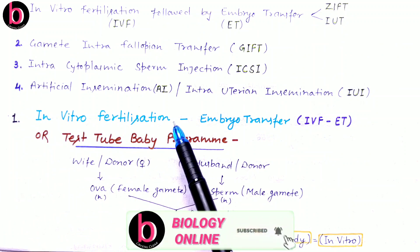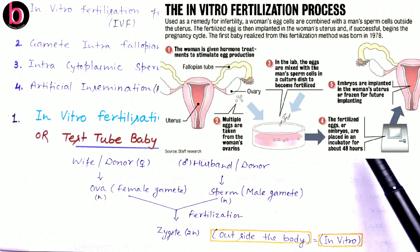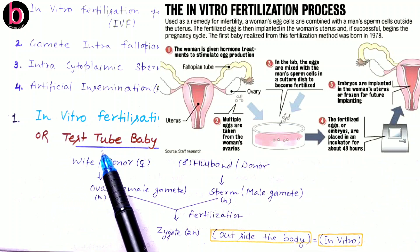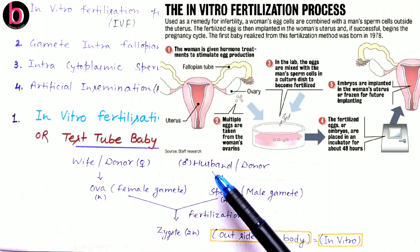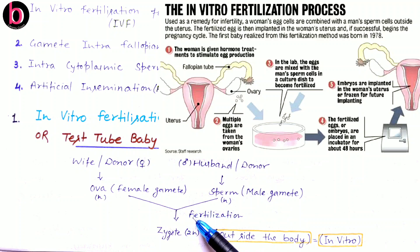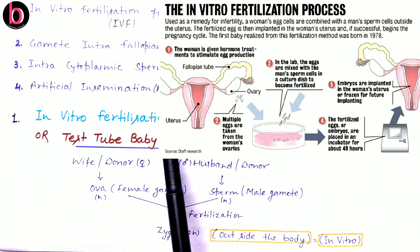We will now discuss In Vitro Fertilization followed by Embryo Transfer, that is IVF-ET. This technique is also known as the test tube baby program. In this process, the ovum (egg or female gamete) is taken from the wife or a respective donor, and sperm is taken from the husband or a respective donor. Both are fused outside the body in vitro, in an artificial medium where atmospheric conditions are almost similar to the female human body.